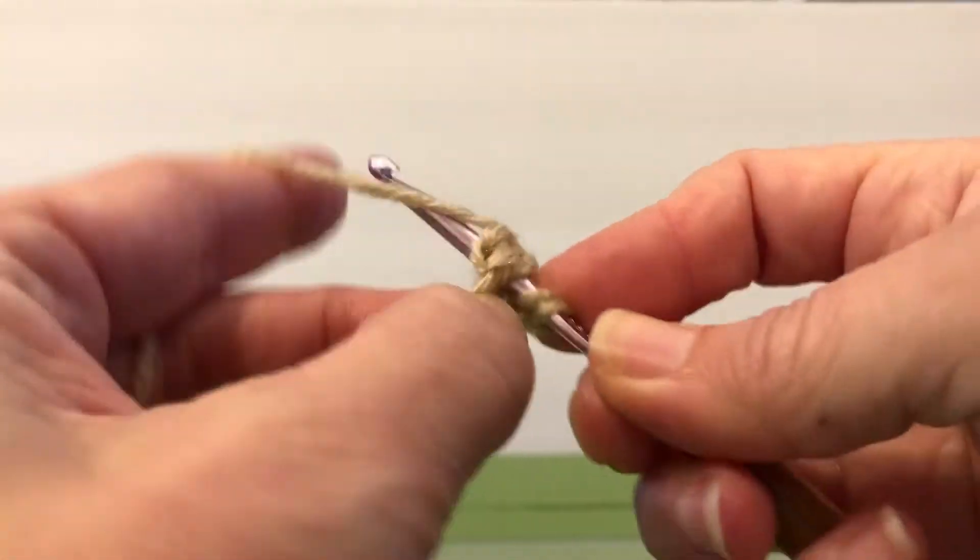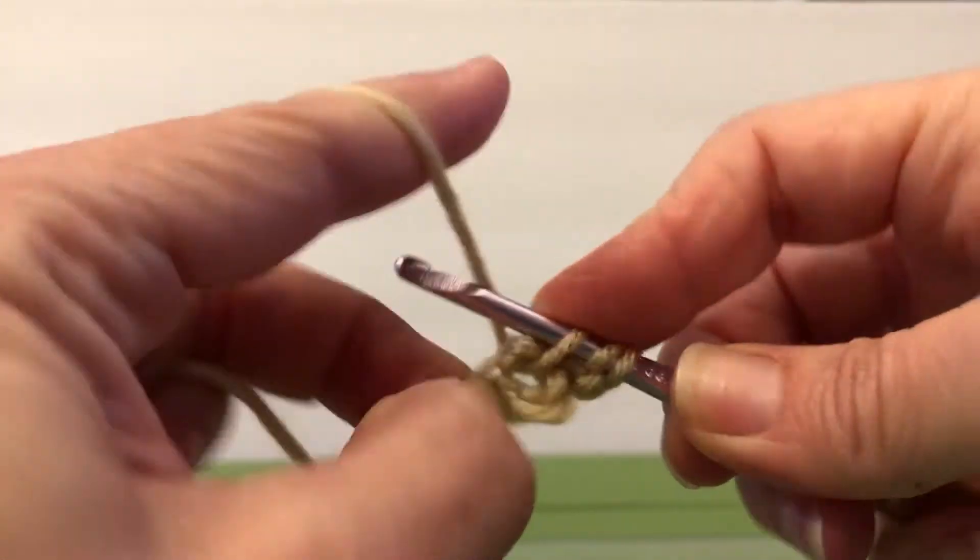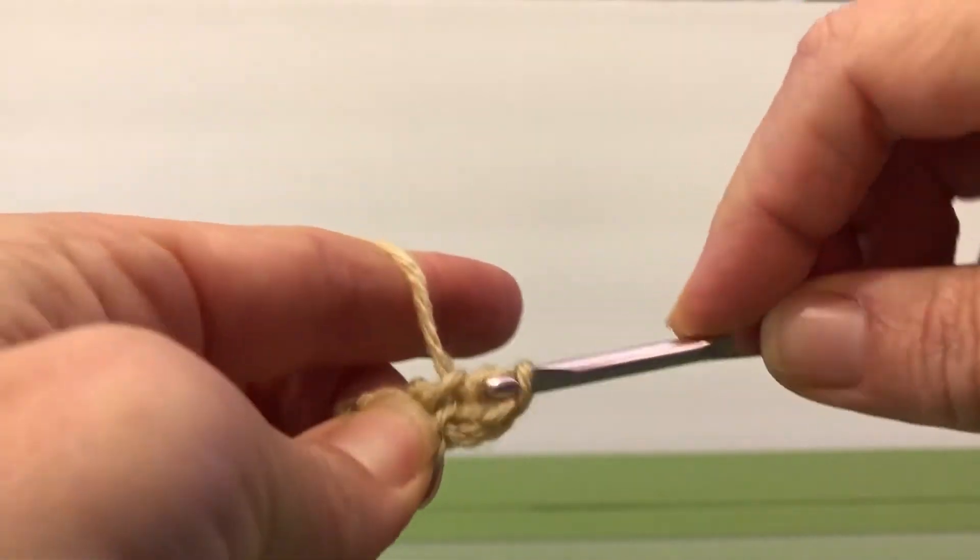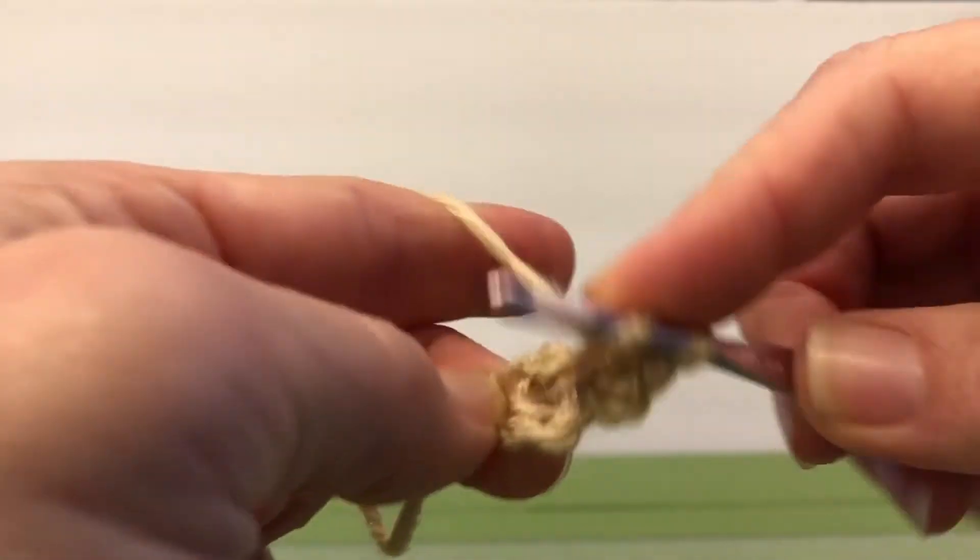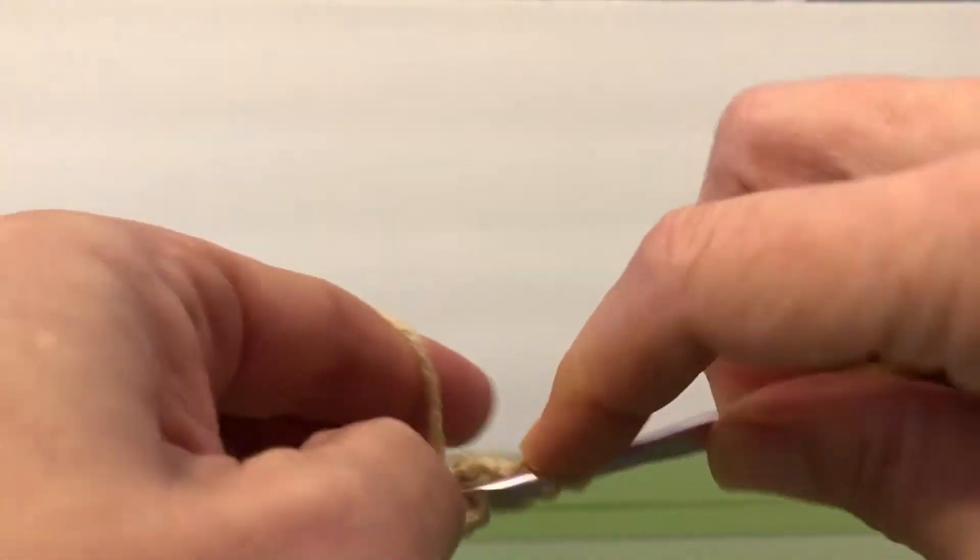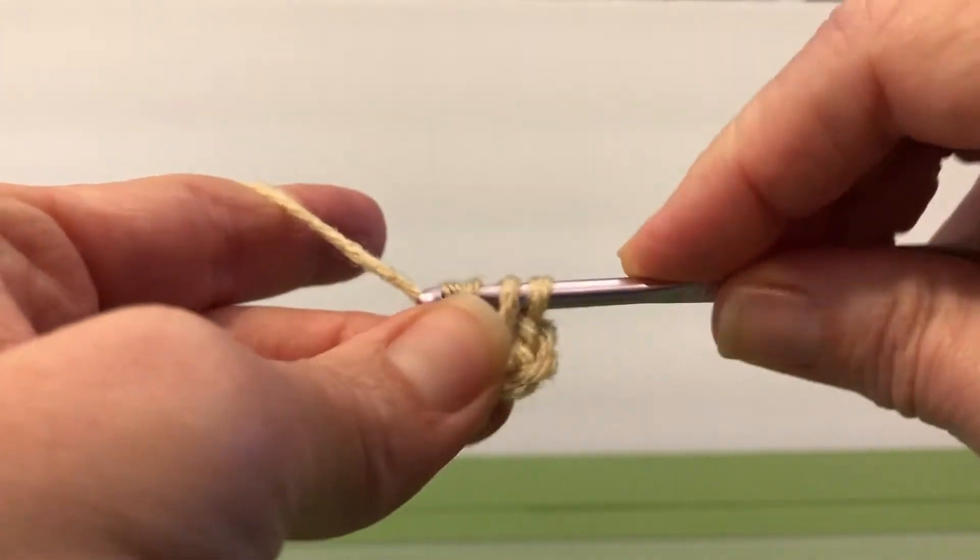So you want to go in here, yarn over, pull through, yarn over. This is a double crochet, so pull through two, and pull through two again. So that's our first one. We're going to go back, do it again, and this is number two.